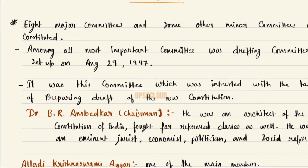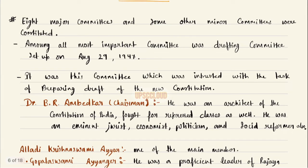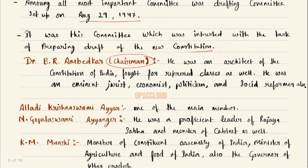The value-added material I will also dictate to you. What was that? First, eight major committees and some other minor committees were constituted. Among all, the most important committee was the Drafting Committee, set up on August 29, 1947. It was this committee which was entrusted with the task of preparing the draft of the new constitution. Dr. B.R. Ambedkar was its chairman. He was the architect of the Constitution of India and fought for repressed classes.